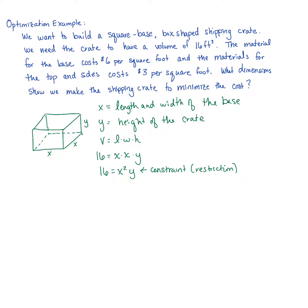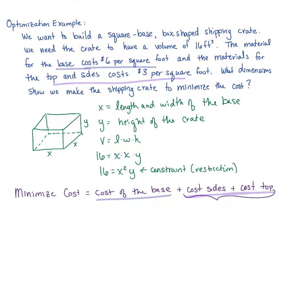I like to break this up a little bit, a piece at a time so I don't get overwhelmed. Number one, we're trying to minimize cost. Our cost is going to be the cost of the base, which is more expensive, plus the cost of the sides and the cost of the top. We can wrap these two into one thing because the material for the top and the sides is $3 per square foot, and the cost for our base is $6 per square foot.